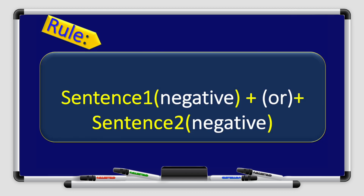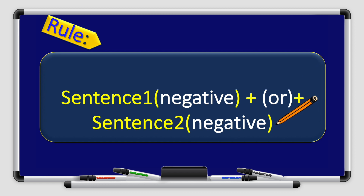What is our rule? Sentence 1 in negative form, plus the conjunction 'or', plus sentence 2 in negative form.